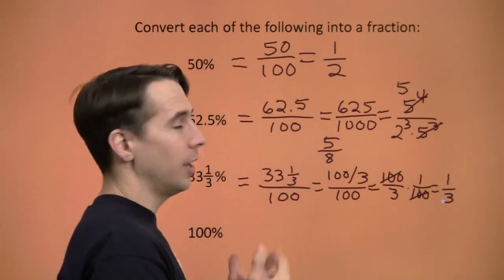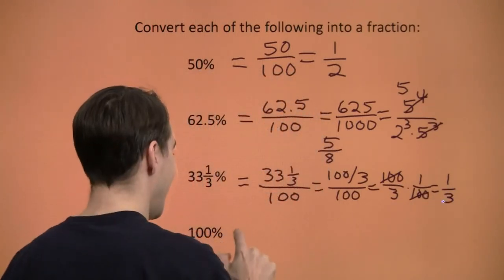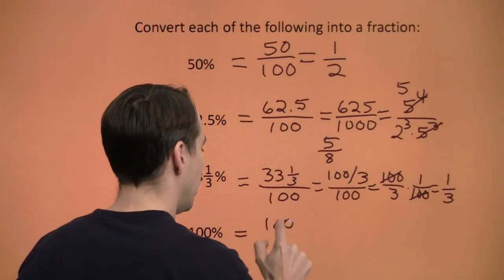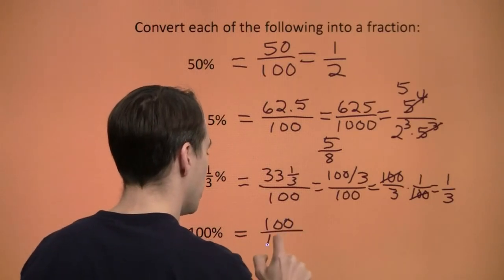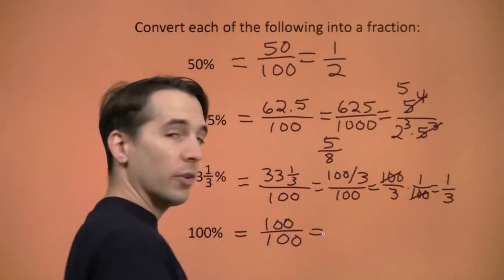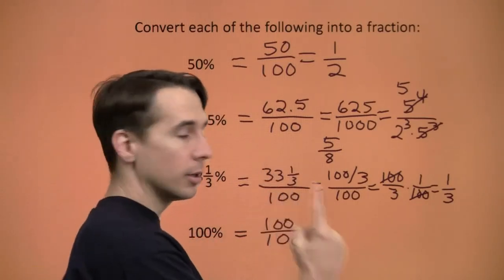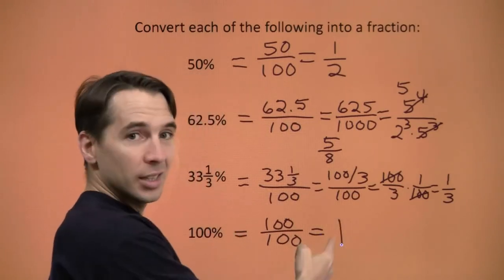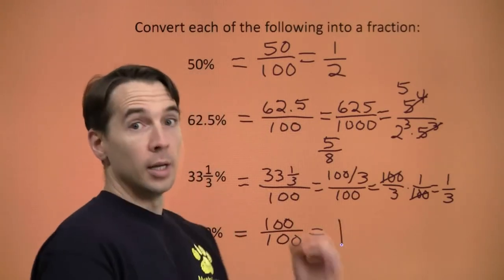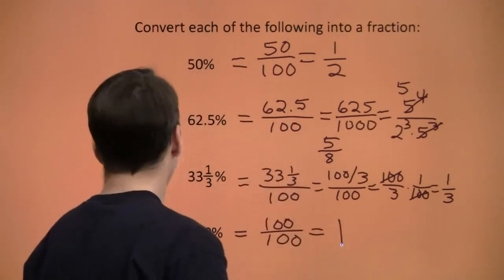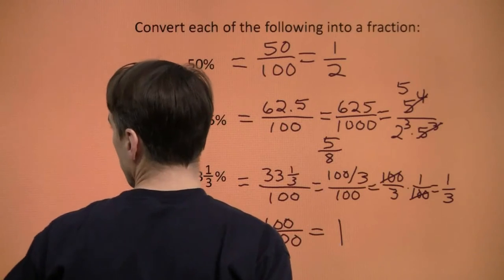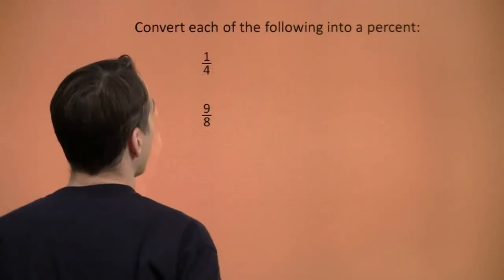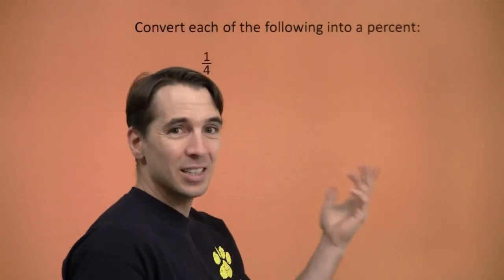Finally, 100 percent — that's 100 over 100, which is 1. So 100 percent is 1, and 0 percent is 0. Those are the easy ones.